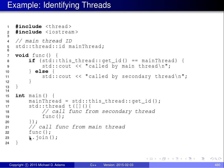To finish off the main function, a join operation is performed to make sure the thread associated with object T has finished its execution and the thread object is marked unjoinable before we exit the main function and destroy thread object T.